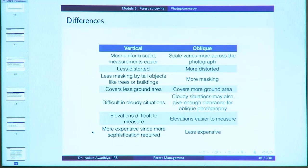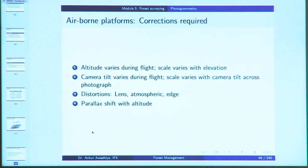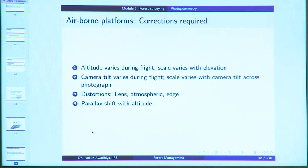In vertical photographs the scale is more uniform and measurements are easier, while oblique photographs have scale differences across the image. For airborne platforms, sufficient overlap between images must be ensured. If altitude varies during flight, the scale will vary, so aircraft try to fly at the same altitude and record it. Tilt variation during flight causes scale variation across the photograph. Several distortions must be corrected: lens distortion, atmospheric distortion, edge distortion, and parallax shift with altitude.